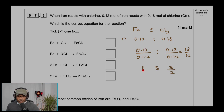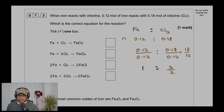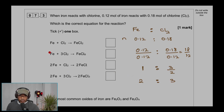18 over 12 simplifies to 3 over 2. To avoid the fraction, multiply both by 2, giving a ratio of 2 to 3. So the ratio of iron to chlorine gas is 2:3. Looking at the answer options, I need the equation with a 2:3 ratio, so that's the one to select.